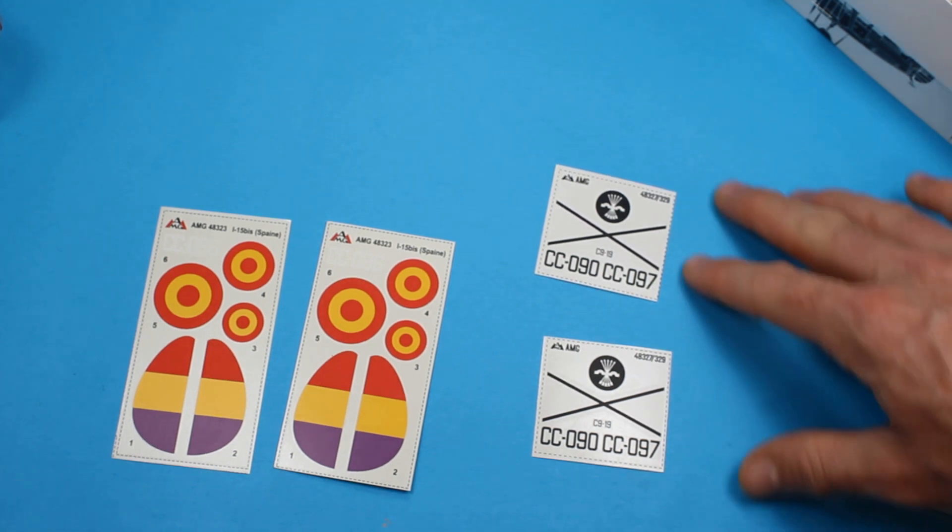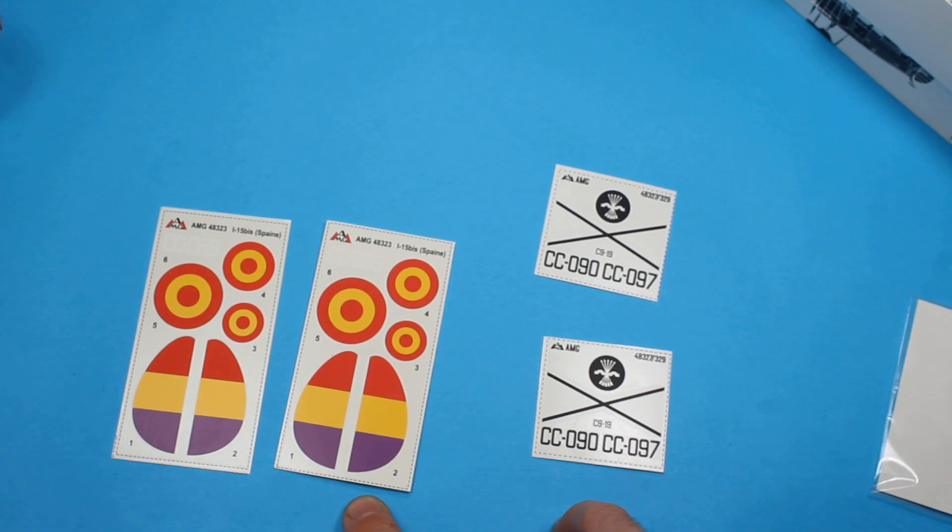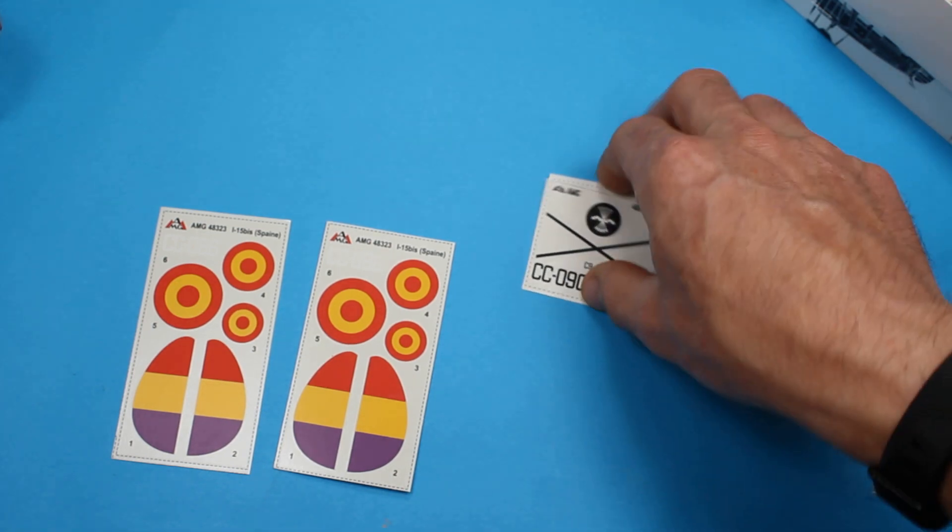We've got the Nationalist or Spanish Air Force insignia there as well, as well as the Republican fin colors, rudder colors. So there's a lot to be going on with there.